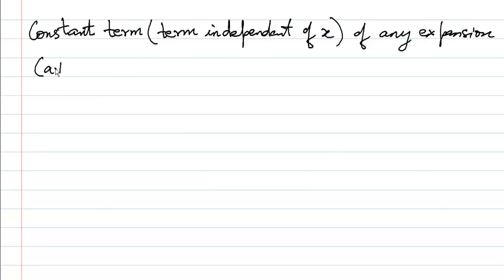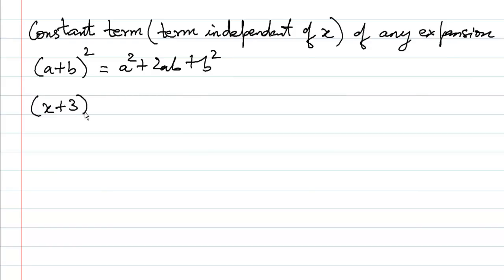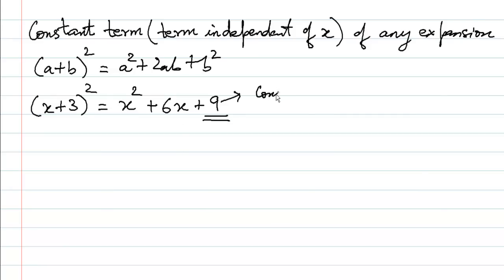Let us start with (a + b)², which gives a² + 2ab + b². But if we have (x + 3)², we get x² + 2·x·3, that is 6x, plus 3² which is 9. This last term, 9, is said to be the constant term.